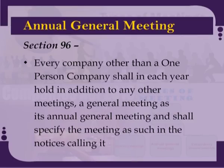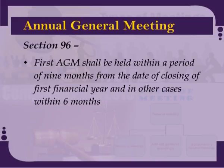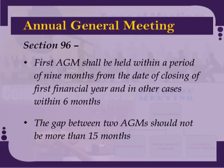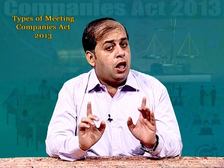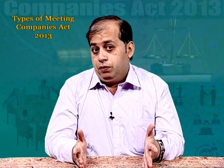As per section 96 of the Companies Act, every company other than a one person company shall in every year hold, in addition to any other meetings, a general meeting as its annual general meeting and shall specify the meeting as such in the notices calling it. The first AGM shall be held within a period of 9 months from the date of closing of the first financial year, and in all other cases within 6 months. The gap between two AGMs should not be more than 15 months. The Registrar of Companies may for any special reason extend the time within which any annual general meeting other than the first shall be held by a period not exceeding 3 months.